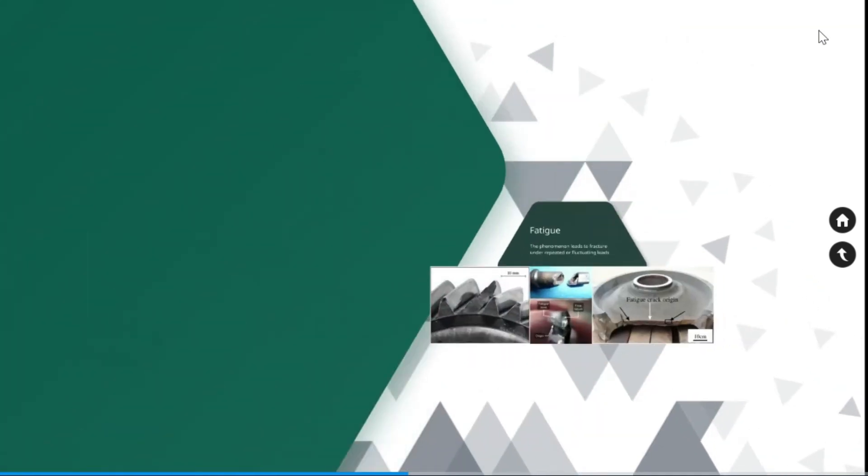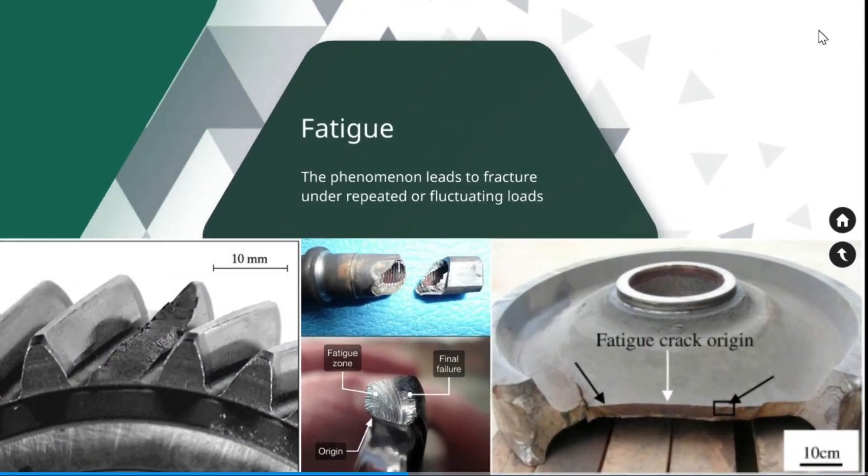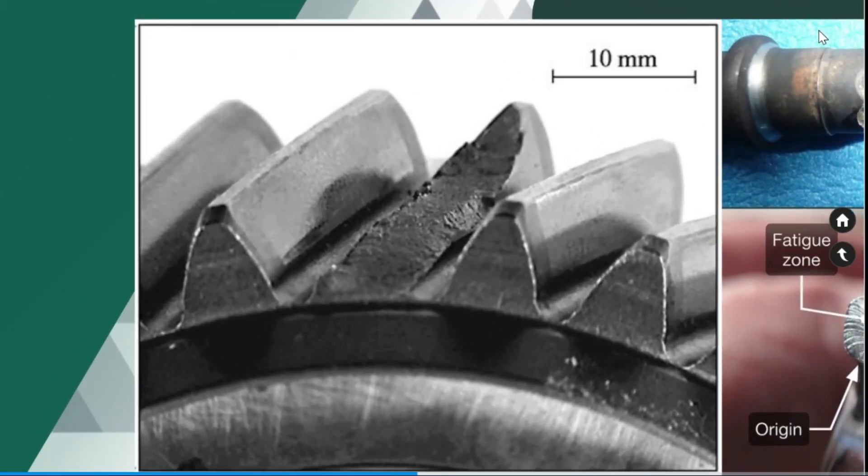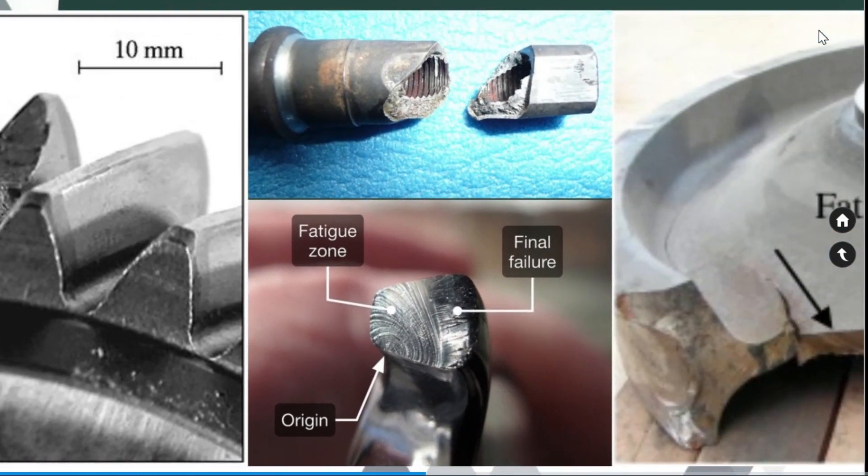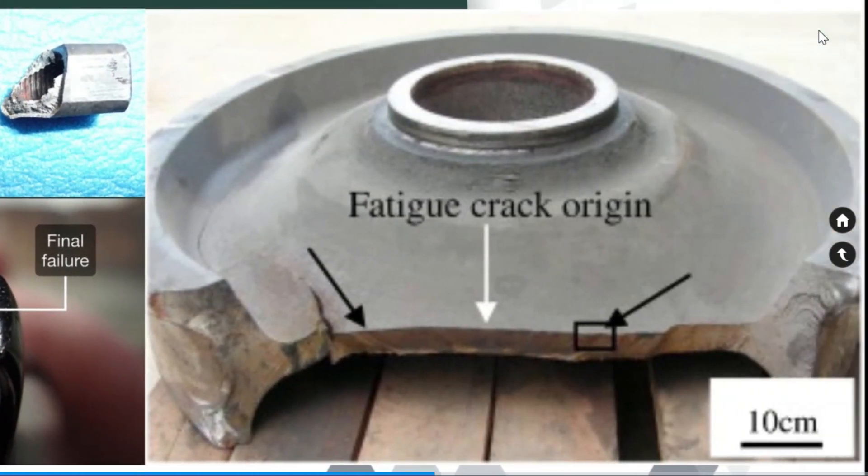Fatigue. Fracture of a material because of the repeated or fluctuating loads are called fatigue. Fatigue fractures are progressive. At the beginning stage, the crack size would be very small and gradually increase the crack size under the action of fluctuating stresses. Here is the image of fatigue fractures happened in multiple components.